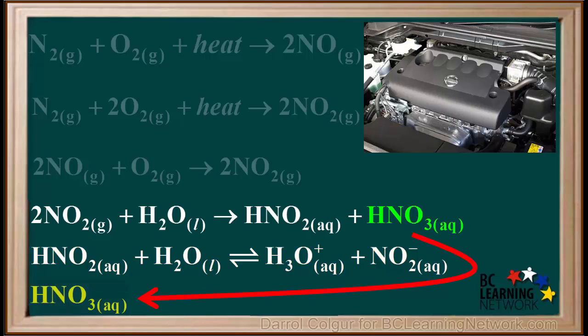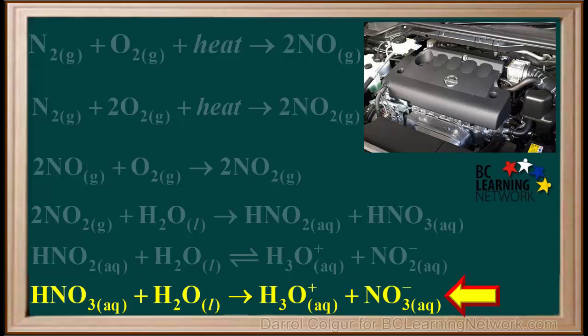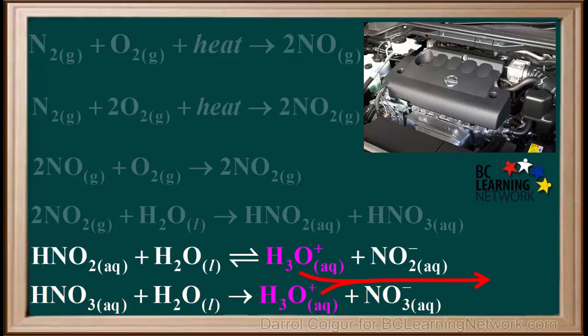The strong acid HNO3, or nitric acid, will completely ionize in water to produce hydronium ions and nitrate ions NO3-. The presence of hydronium ions formed from both acids causes the rain to be acidic, or acid rain.